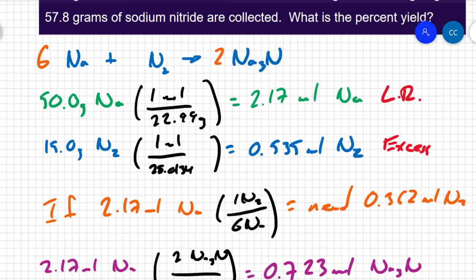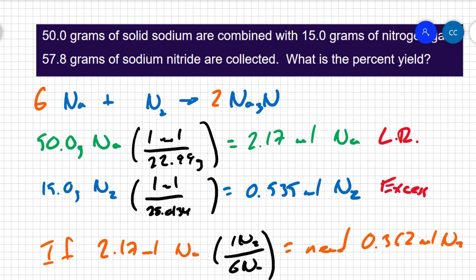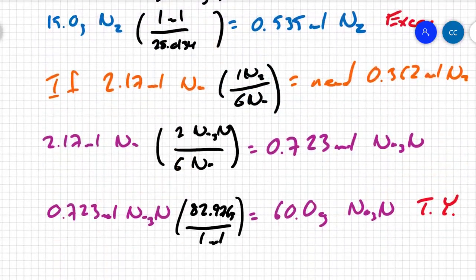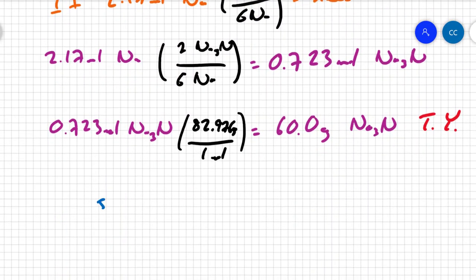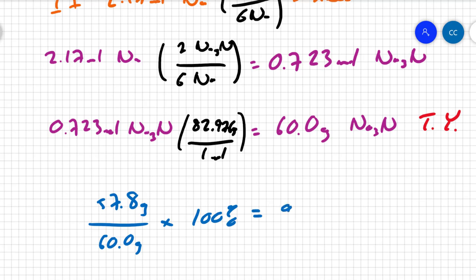If I go back to the question, they tell me that 57.8 grams of sodium nitride was actually collected. So, I could take my actual yield, 57.8 grams, and divide it by my theoretical yield, which is 60 grams, turn that into a percentage, and I get a 96.3% yield, which is pretty good.